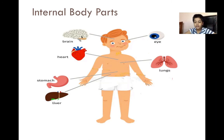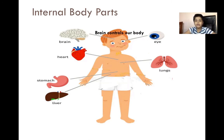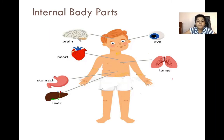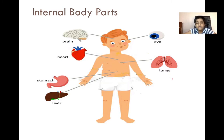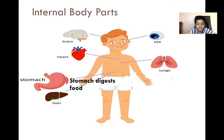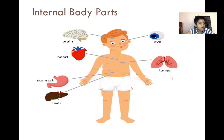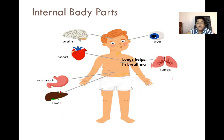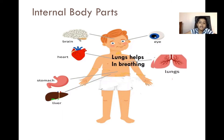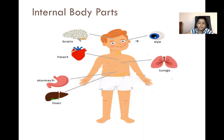Now let us see what the internal body parts are. The first internal body part is the brain. Brain controls our body parts. Heart pumps blood to all of our body parts. Stomach digests food, and liver filters blood and proteins. Lungs help us in breathing.